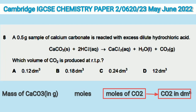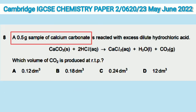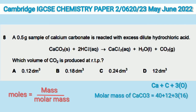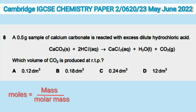We are given mass of calcium carbonate as 0.5 grams. Let us find the number of moles of calcium carbonate using the formula: moles = mass ÷ molar mass. We require the molar mass of calcium carbonate, which is Ca + C + 3×O. Ca is 40, carbon is 12, and oxygen is 16, so 3×16 = 48. This all comes to 100 g/mol.